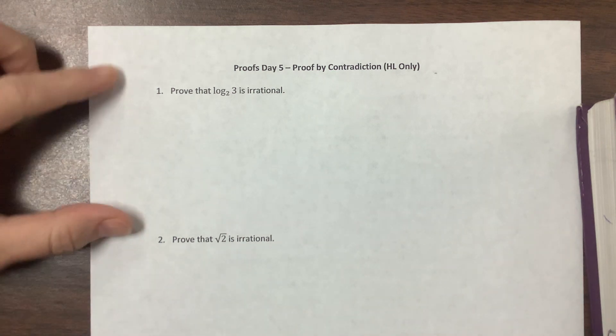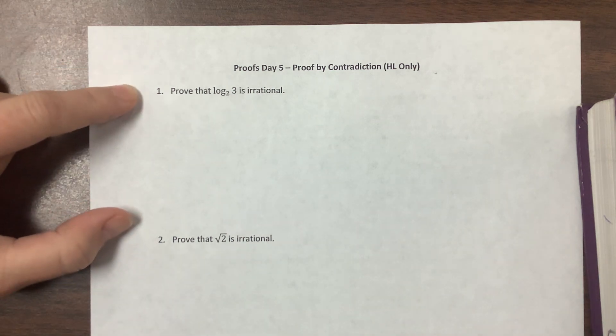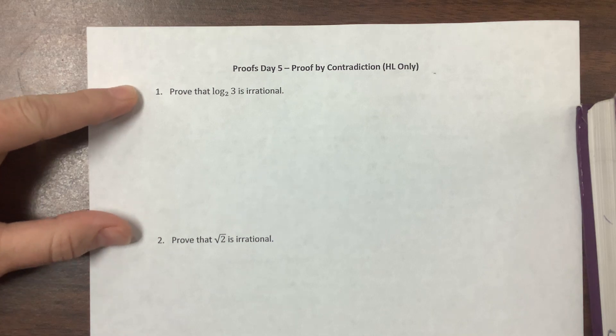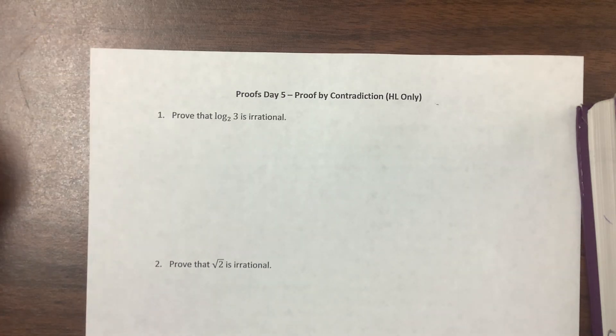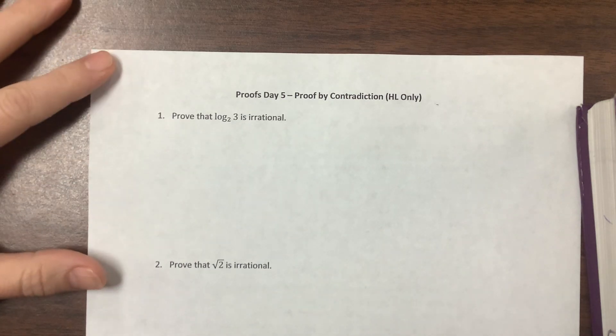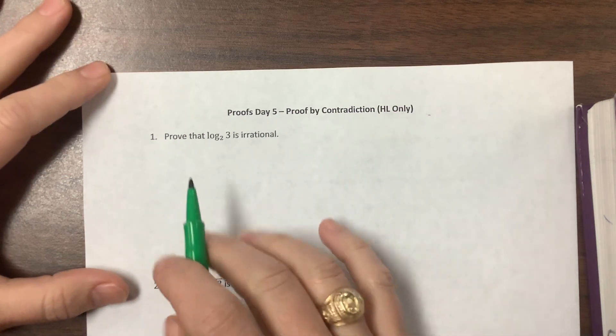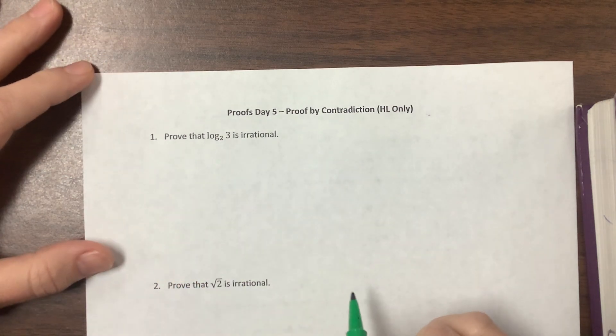So these are two of the examples that our book does. I think they do a third one, and then this one I found online. We'll see how much I do in the first video. So the first one says prove that log base 2 of 3 is irrational.